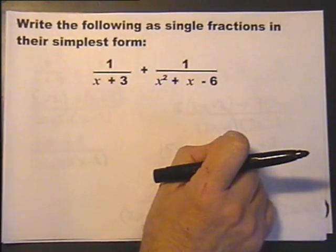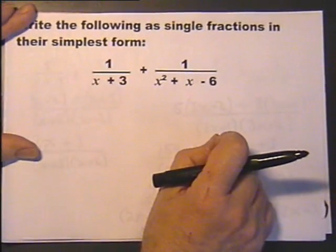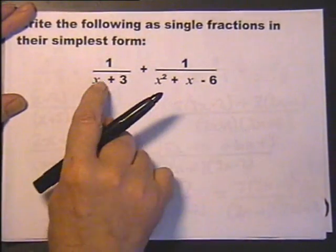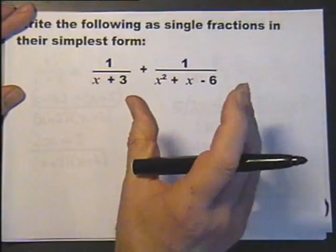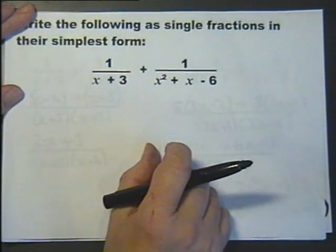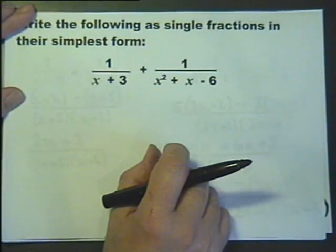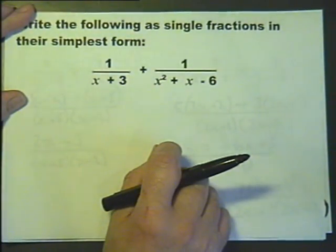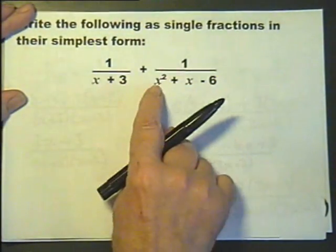So, if we're going to write this as a single fraction, we need a common denominator. Now, that multiplied by that will be a common denominator, and it will work. However, it's always best to have the lowest common denominator. So, let's have a closer look at this.